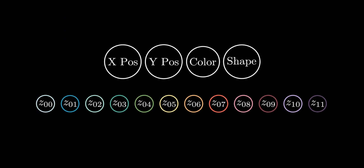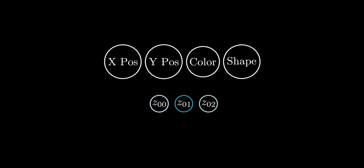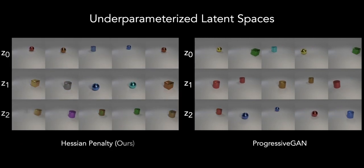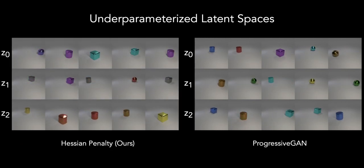What about a situation in which G is now under-parameterized? In other words, there are less z-components than factors in the data. PROGAN learns a very chaotic representation, where it's hard to interpret any of the factors. In contrast, the Hessian penalty results in much smoother latent traversals.